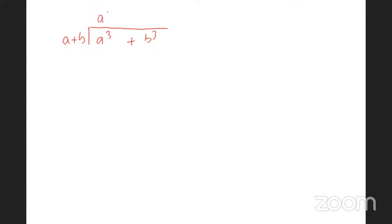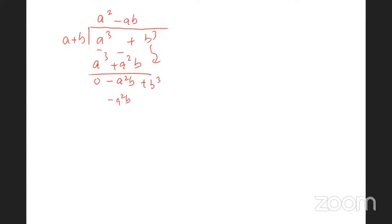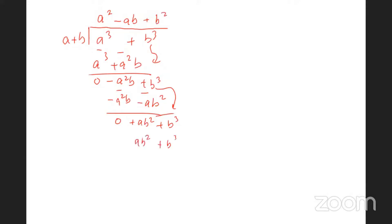Dividing a cubed plus b cubed by (a plus b): a into a cubed gives a squared; a squared times a is a cubed, a squared times b is a squared b. Subtracting gives zero; bring down, leaving minus a squared b. Next: a into minus a squared b gives minus ab; minus ab times a is minus a squared b, minus ab times b is minus ab squared. Subtracting gives zero with plus ab squared remaining; bring down b cubed. Then a into ab squared gives b squared; b squared times b is b cubed. Subtract and you get zero.